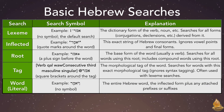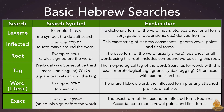Next is the word or literal search. It too has no symbol. It searches for the entire Hebrew word — that is the inflected form plus any attached prefixes or suffixes. Finally, the exact search uses an equal sign before the word. It looks for the exact form of the lexeme or inflected form, meaning it also requires Accordance to match vowel points and final forms.